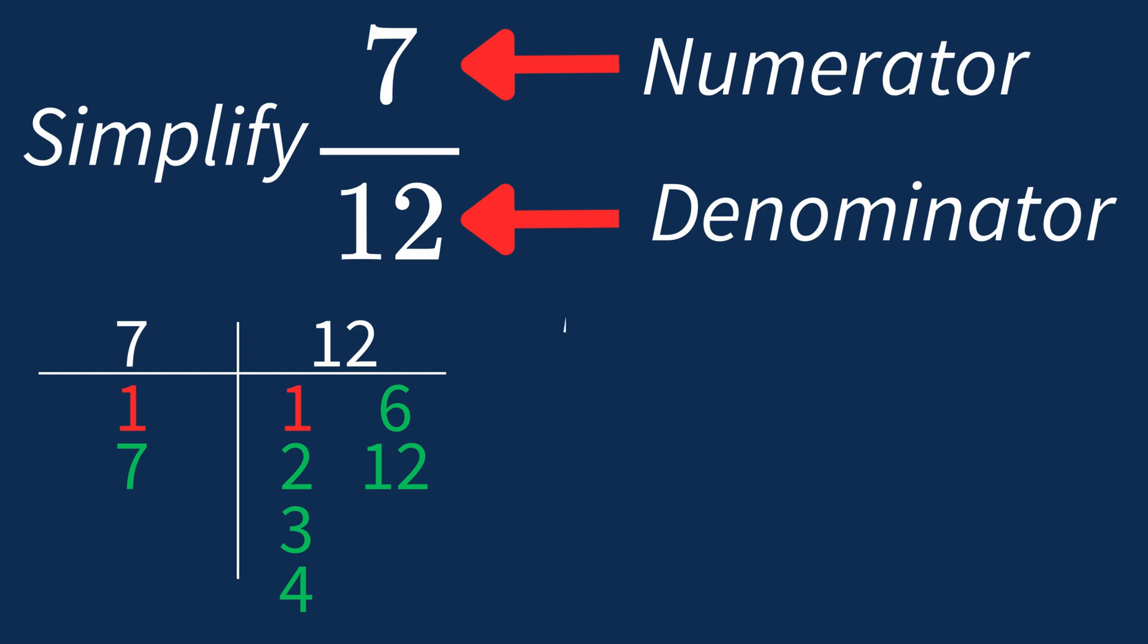Dividing the numerator 7 by 1 gives us 7. Dividing the denominator 12 by 1 gives us 12.